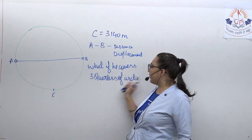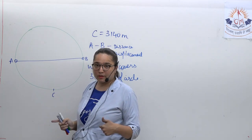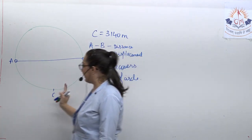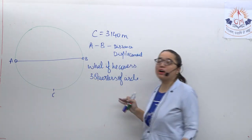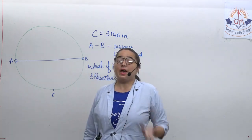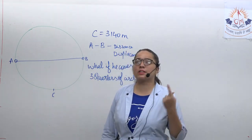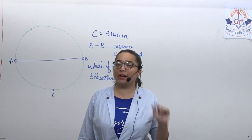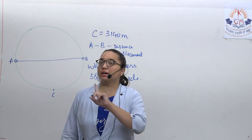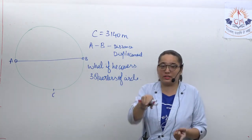For three-quarter coverage: distance is three-halves pi r. For the displacement, using the shortcut: whenever two quadrants are covered, displacement is root 2 times r. If you have understood all the content, this numerical is not hard. The circumference is 2 pi r equals 3140. Taking pi as 3.14, r equals 3140 divided by 2 into 3.14, which equals 1000 divided by 2, giving radius equals 500 metres.